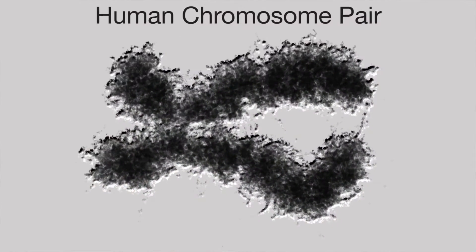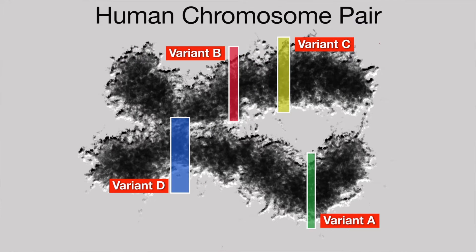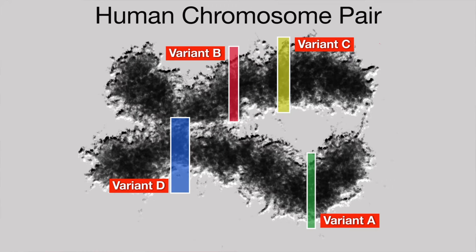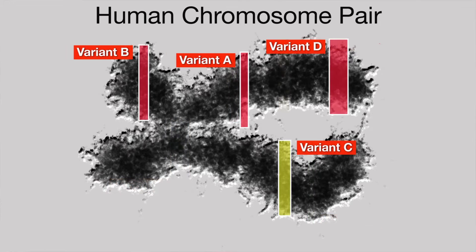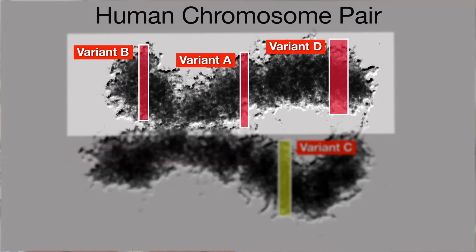Cells in the human body store DNA in 23 pairs of chromosomes inherited from the parents. Knowing how genes and gene variants are distributed between these chromosome pairs — what's termed their chromosomal or haplotype phase — can give us important information on how a person's genes will be expressed, including whether or not some inherited mutations may develop into an illness.